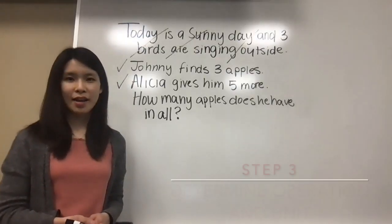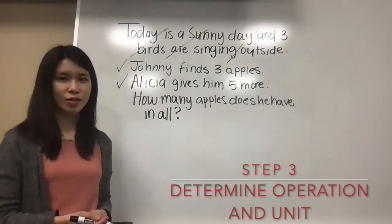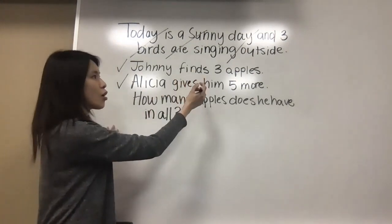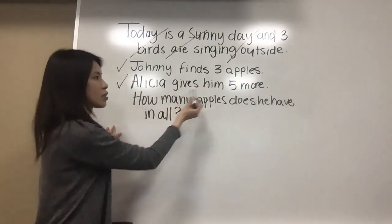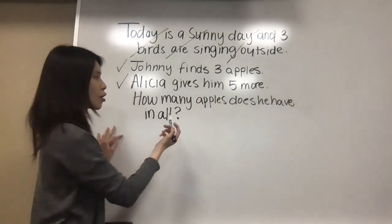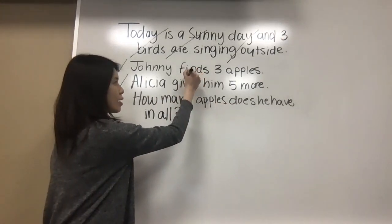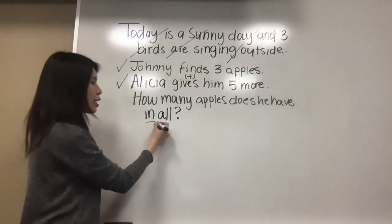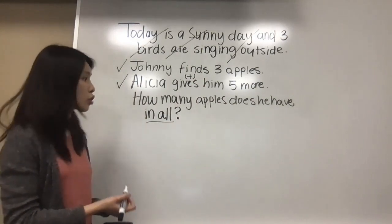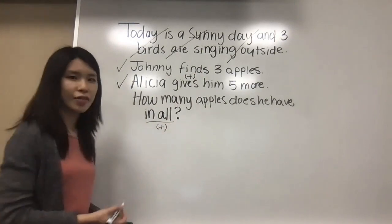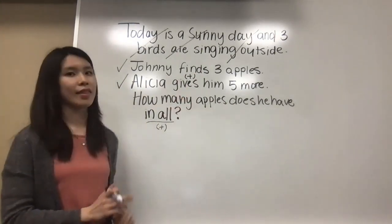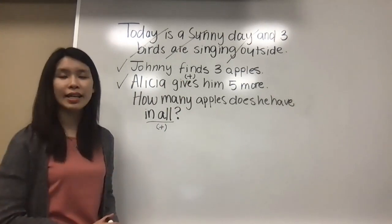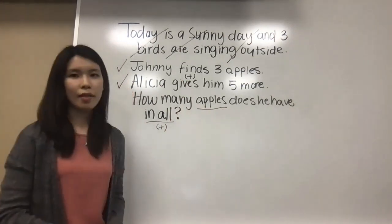The third step is to determine the operation and the unit for the answer. First, let's talk about the operation. We see that Johnny already has three, but Alicia gives him five more — so it's adding five more. Let's put a plus sign here to remind ourselves it's addition. Also, the question asks 'in all,' meaning in total, so it's also an addition. After identifying the operation, let's identify the unit. In this question, we're looking for how many apples, so apples should be the unit.